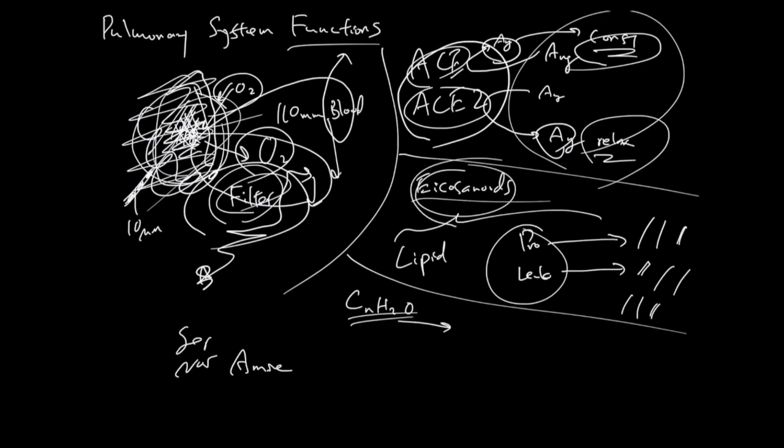Lung processes a bunch of eicosanoids, prostaglandins, and leukotrienes, which again do this constriction-opening of things. A bunch of carbohydrate metabolism happens in the lung because lung is a big consumer of mucus and surfactants. And finally, amines also get processed in the lung a lot.